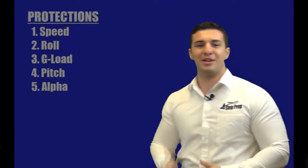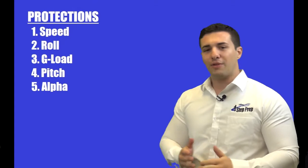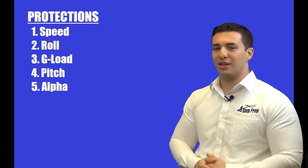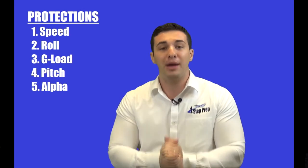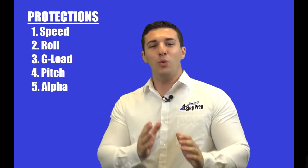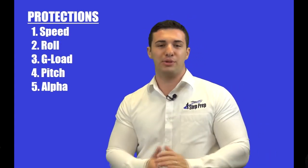Getting into normal law, you've got various protections, and it's going to start with speed protection. In normal law you have speed protection, roll protection, g-load protection, pitch protection, and finally the one most commonly asked about — your alpha protection.